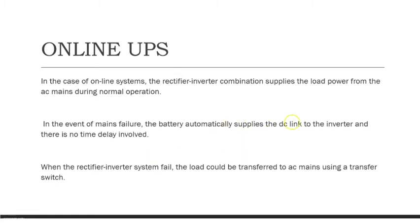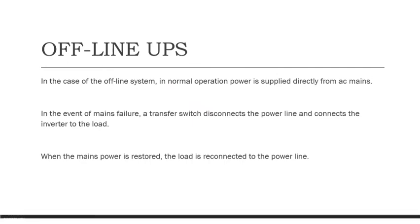Whenever the rectifier-inverter system fails, there is a direct transfer to the main supply. So the main supply connects to the load, and in between there is the online UPS which always provides electric power to the load. When the main supply fails, the UPS provides electric power; and when the UPS itself fails, there is a direct connection to the mains. In all cases, the rectifier-inverter combination of the online UPS is providing electric power.